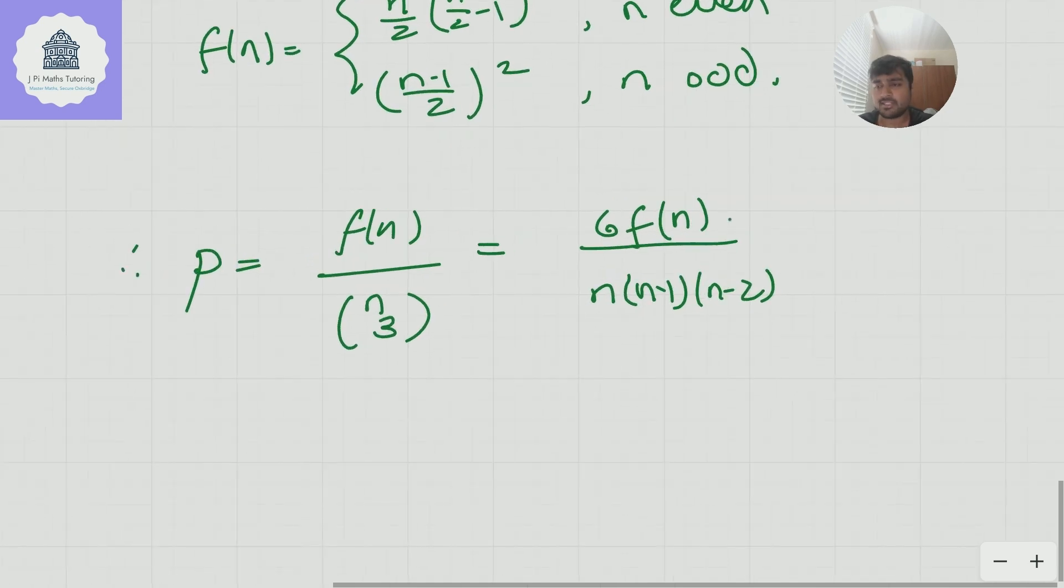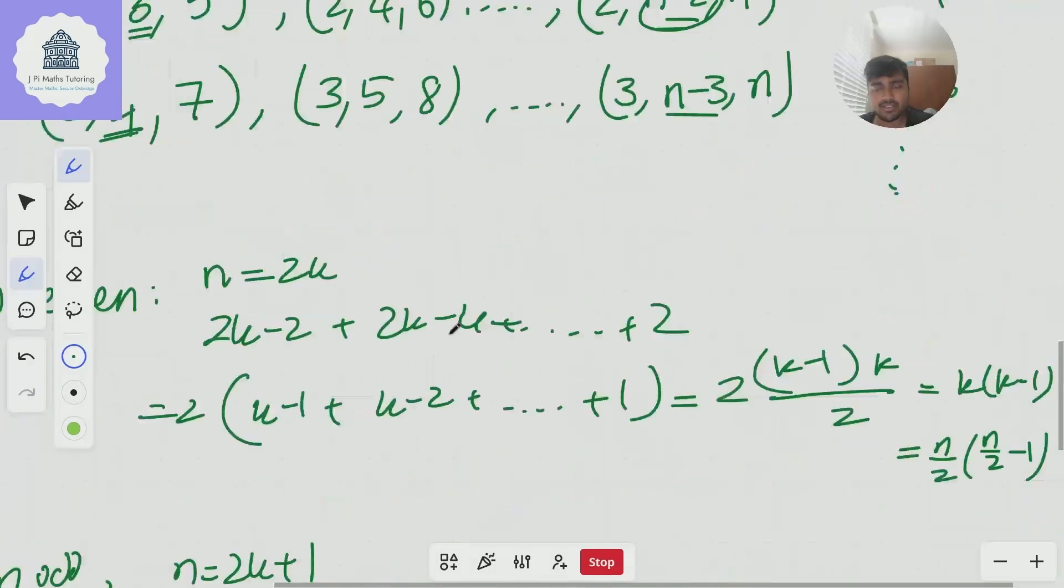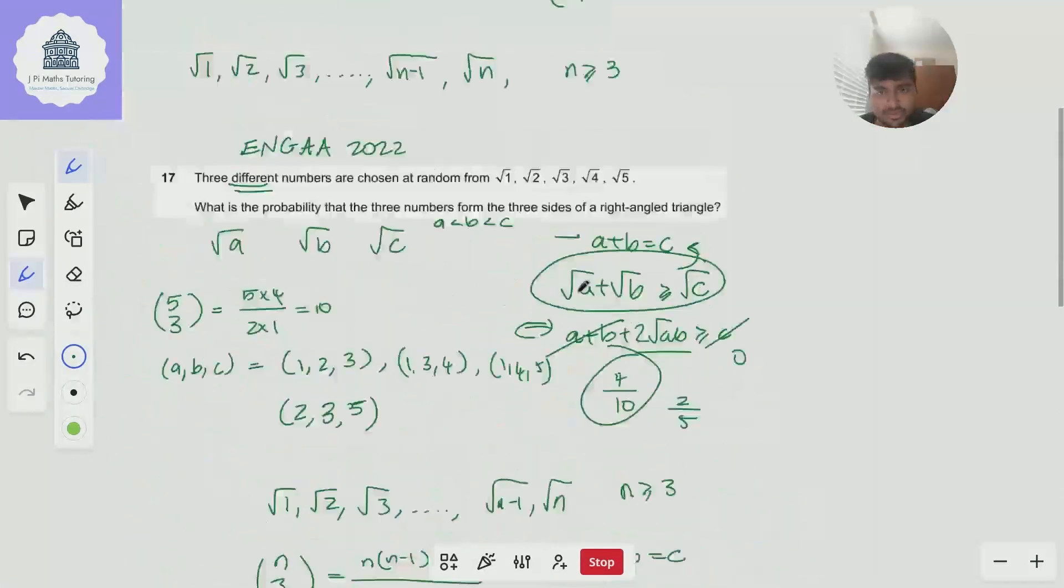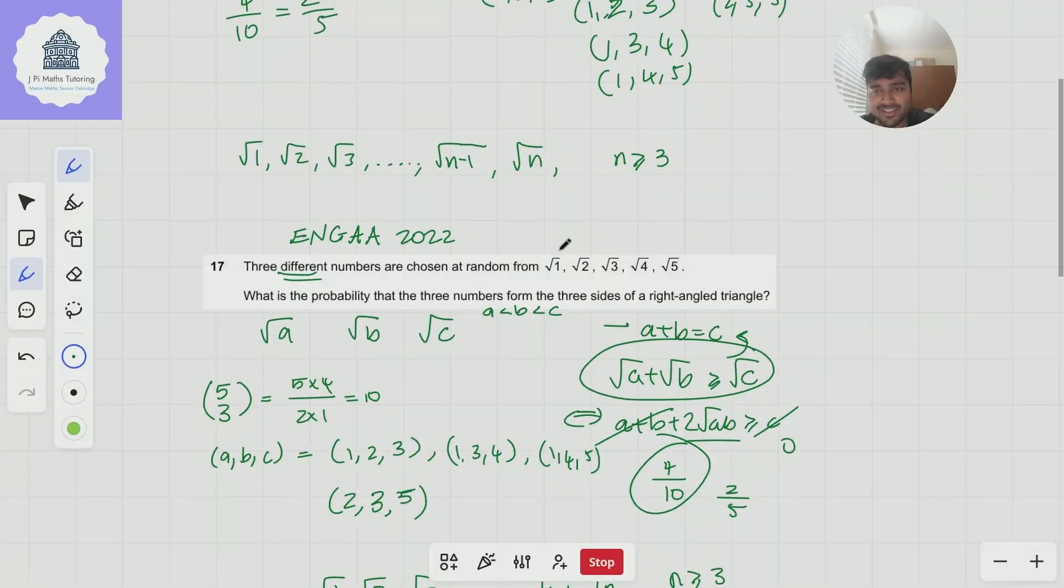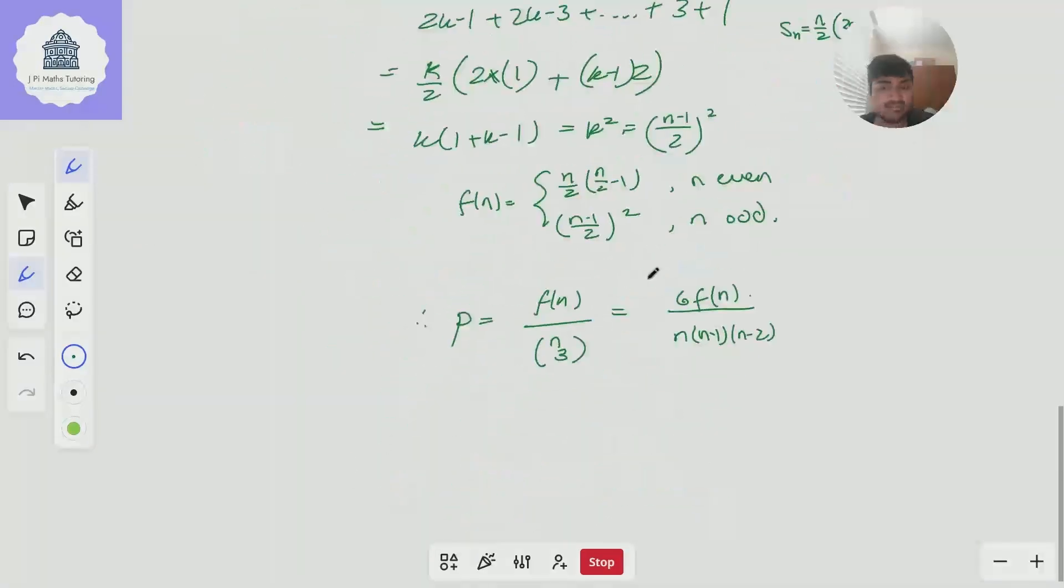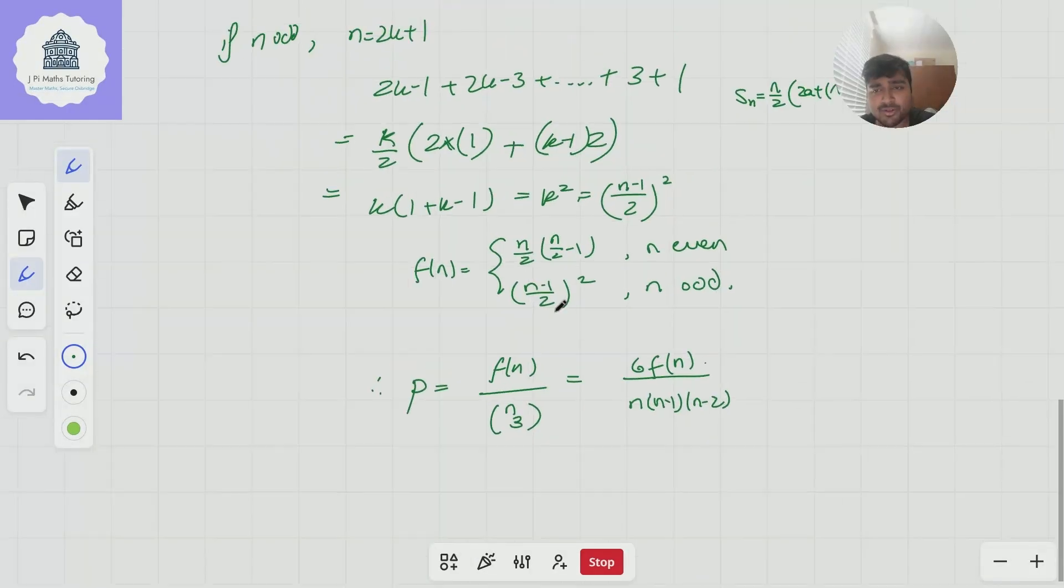So it's a pretty cool little problem here for a generalization. Obviously this was in the engineering test it was just a specific case of route one, route two, route three, route four, route five up here. You can see my first attempt at filming the video up here and yeah it's nice to generalize it. It's a pretty cool problem.